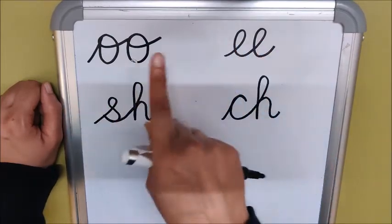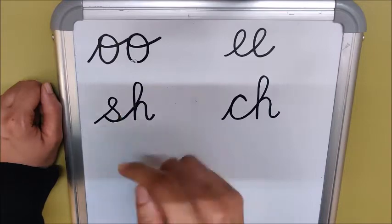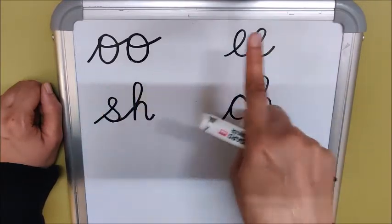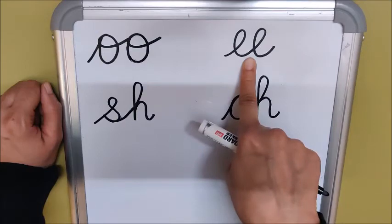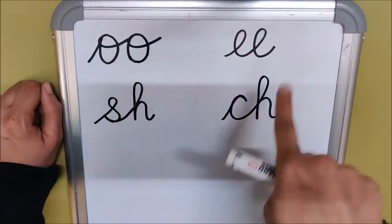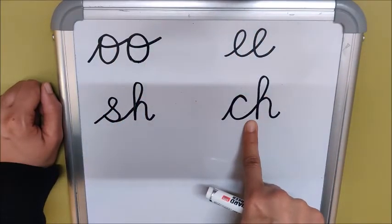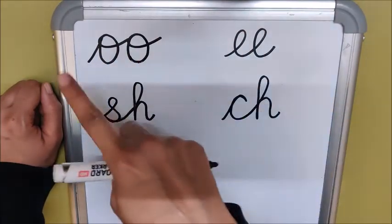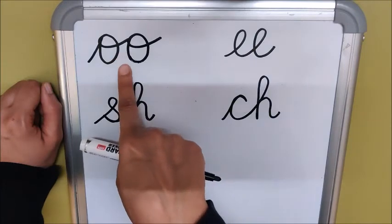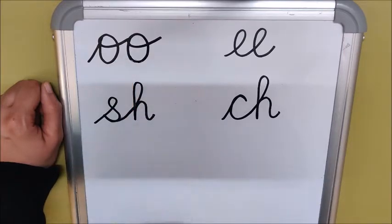Look where is my finger going. Tell me the sound of this. Correct. Now tell me the sound of this. What is the sound of this? Correct, E. Now tell me the sound of this. Correct, Ch. Now tell me the sound of this. What is the sound of this? Correct, U. Well done.